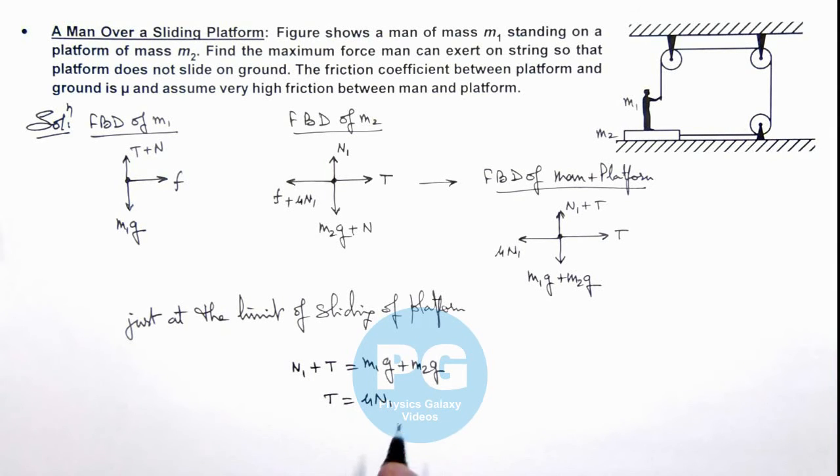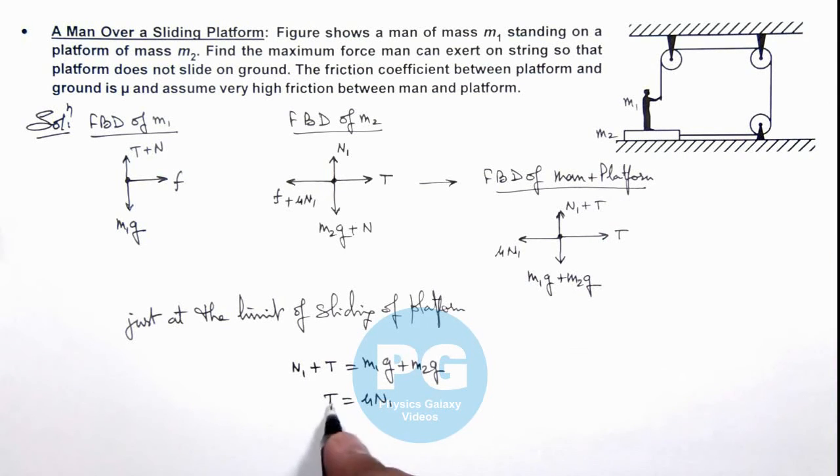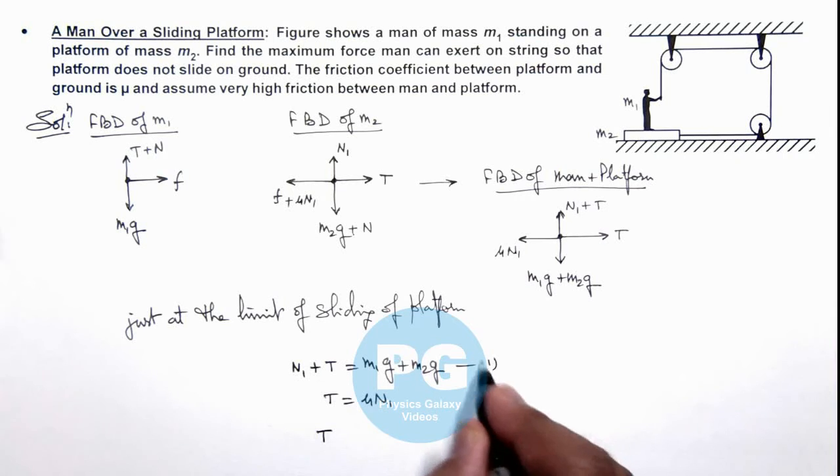In this situation, if we substitute the value of N1, which is T/μ, we can calculate the value of tension, because we are just required to find the force exerted by man on the string. We can substitute the value of N1 from equation 1 to equation 2.